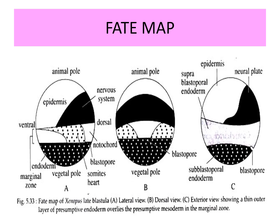In the exterior view, the blastopore is seen very clearly near the endoderm. We also have the supra-blastoporal endoderm and the sub-blastoporal endoderm, along with the epidermis and neural plate. This covers the fate map of Xenopus, that is the late blastula. Essentially, fate maps tell us which portion will develop into which tissue.